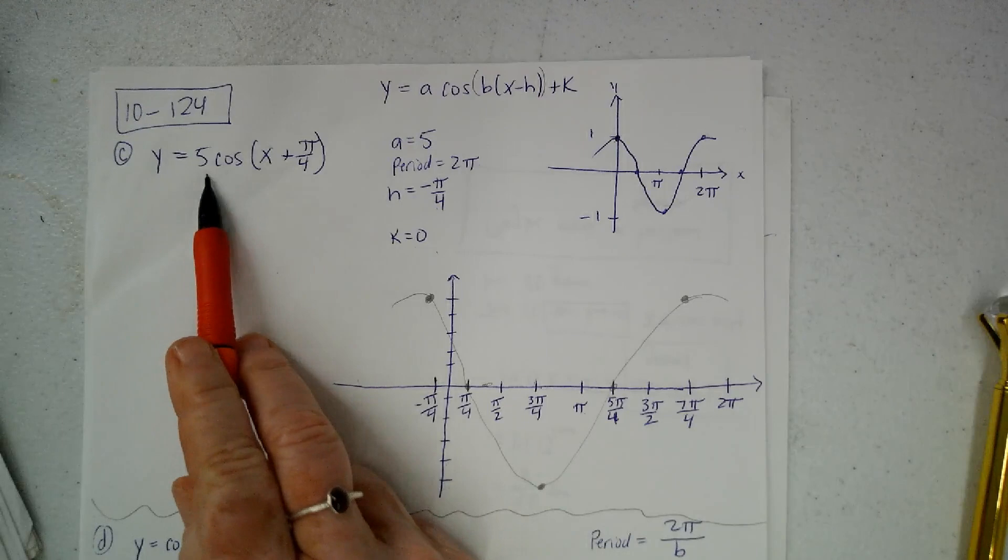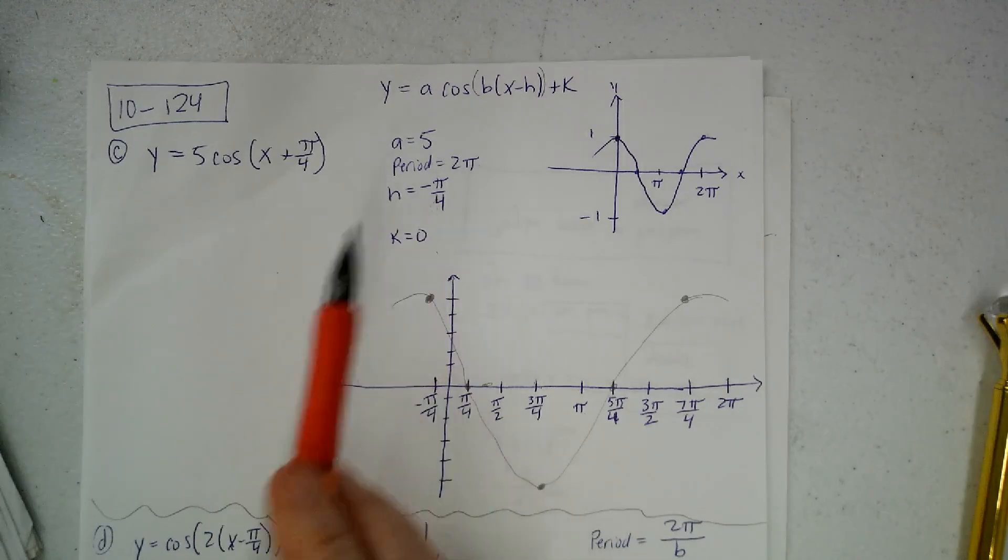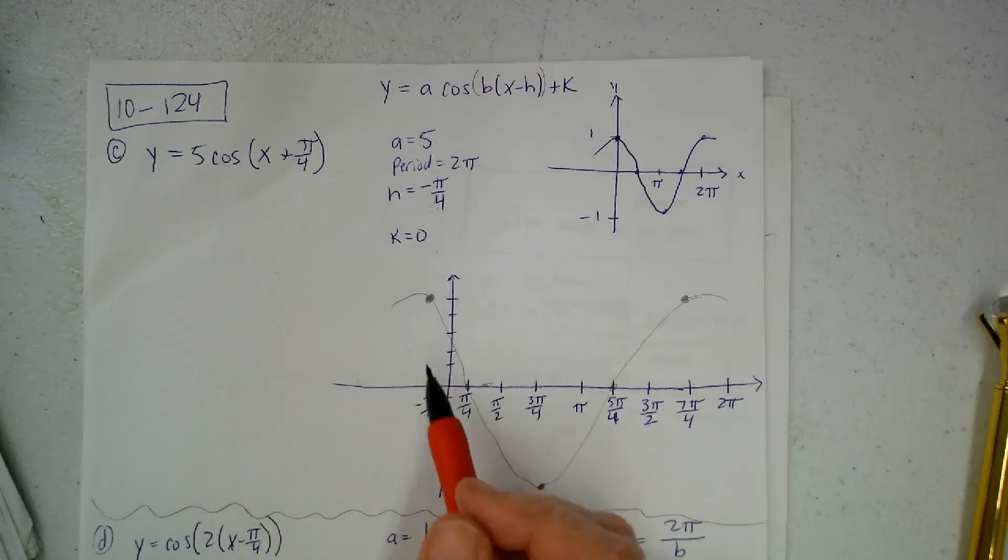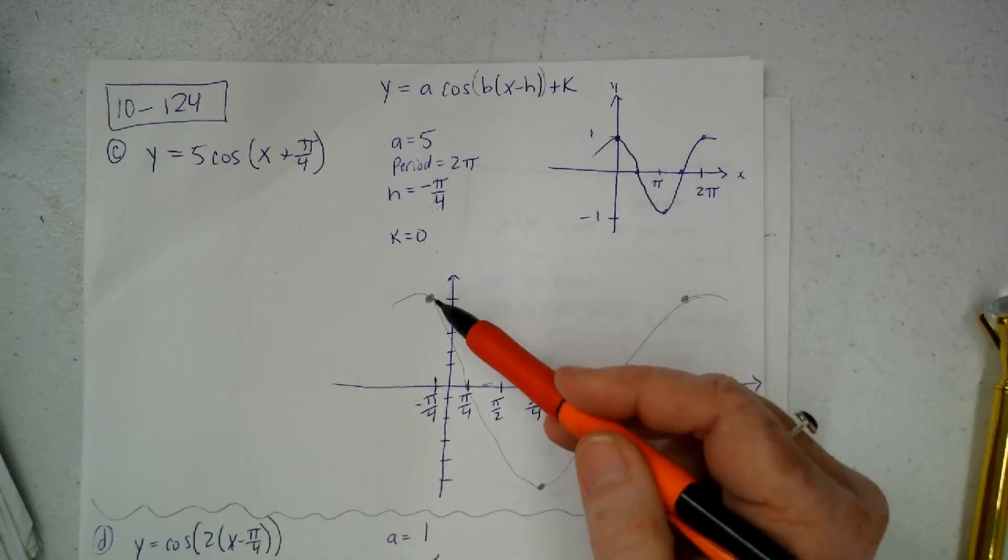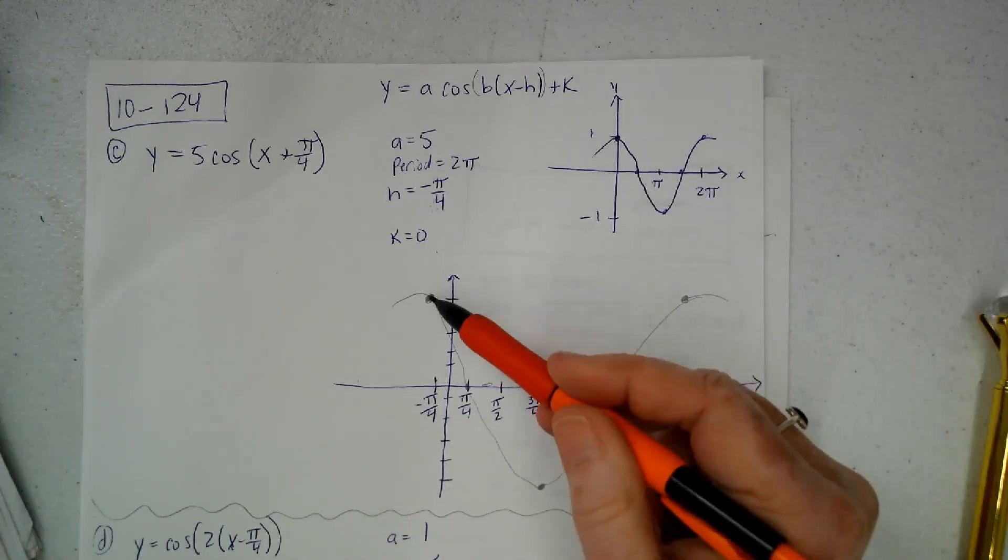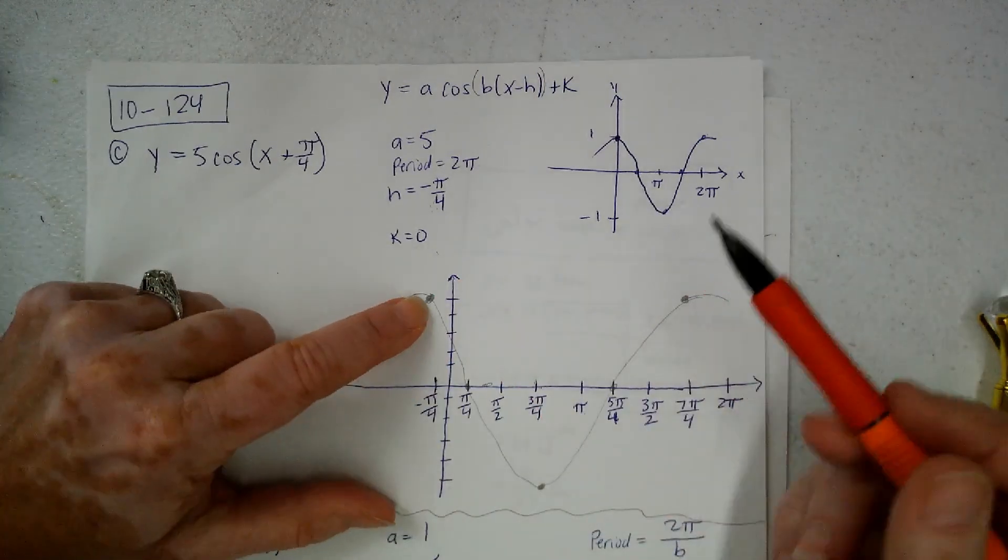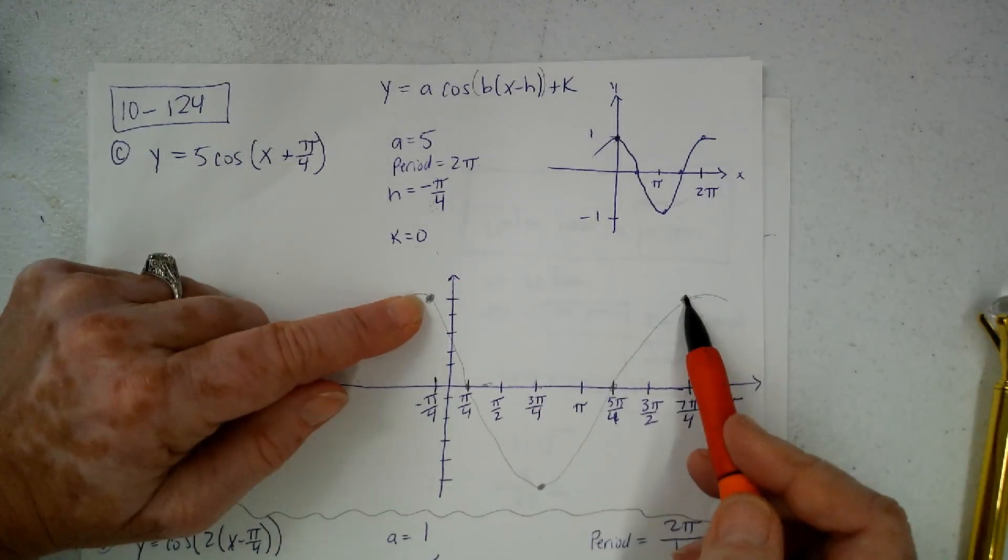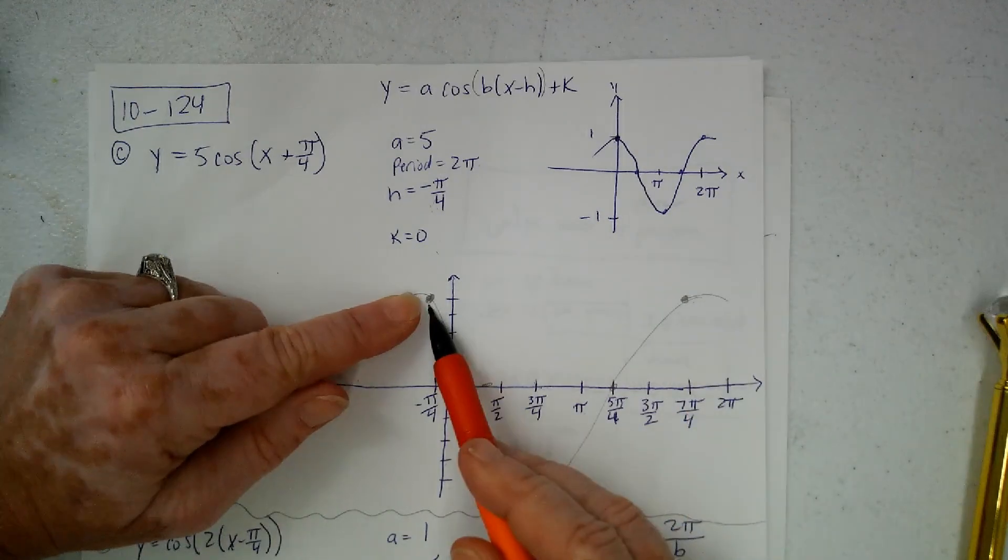My horizontal shift is left by π over 4. So I'm going to start my graph on a high point at negative π over 4.